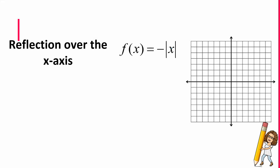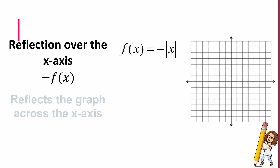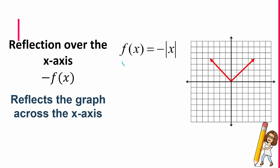The last transformation I want to talk about is the reflection over the x-axis. This is going to look like a negative in front of the entire function, and what that does is reflect the graph across the x-axis. Using our parent table, it literally changes the sign on our y values. So we get the points (0, 0), (negative 1, negative 1), and (1, negative 1). It is an upside-down V — reflected across the x-axis, just like that.